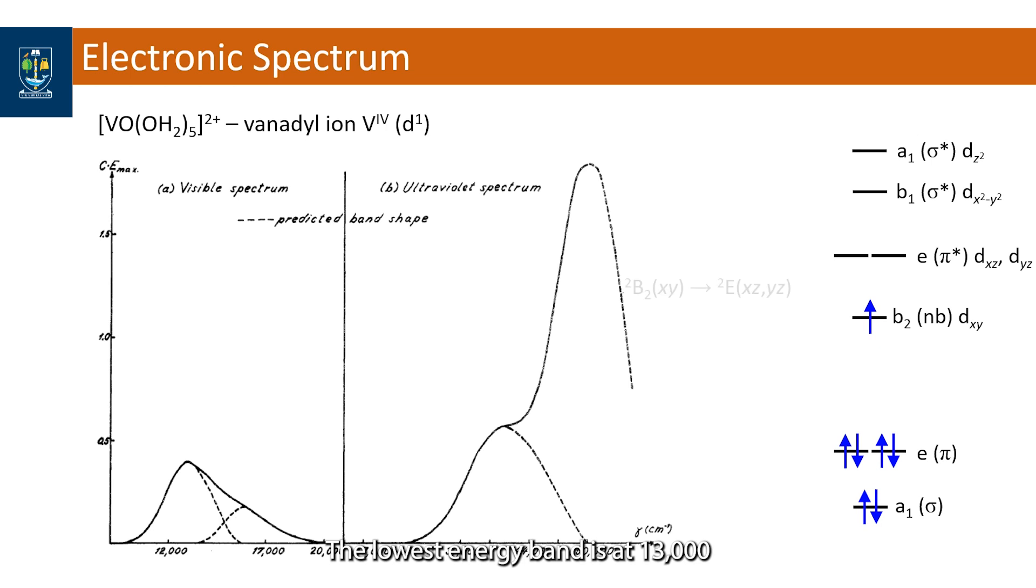The lowest energy band at 13,000 wave numbers corresponds to the small separation between the dxy ground state and the degenerate dxyz orbitals. This is assigned as a doublet B2 to doublet E excitation which is a ligand field or dd transition as confirmed by the intensity.